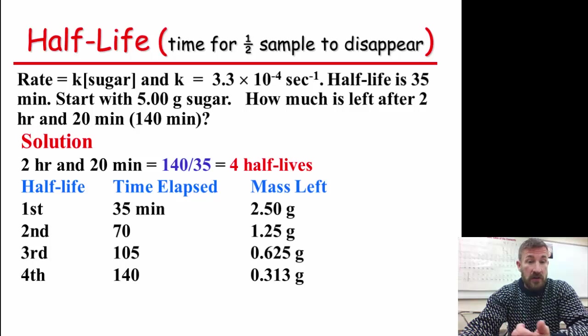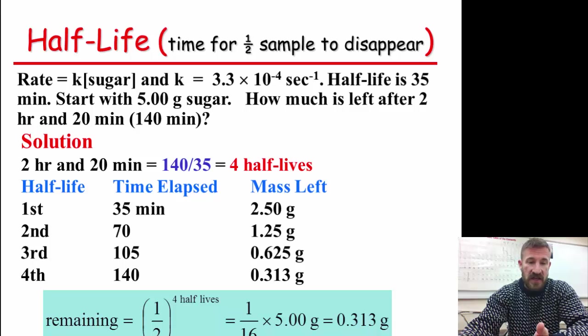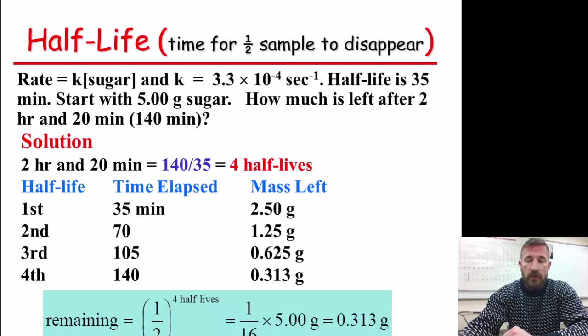What you would do is, basically, this is going to be 1/16th times an original mass, which is 5 grams. And so you simply say the amount remaining is equal to one-half to the power of the number of half-lives. So it's 1/16th times 5, and that gives us 0.313.